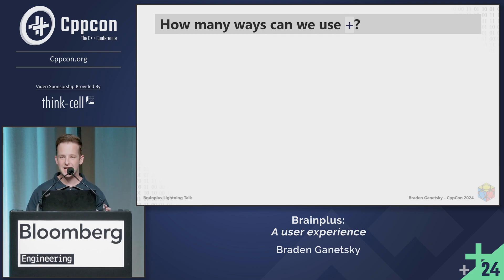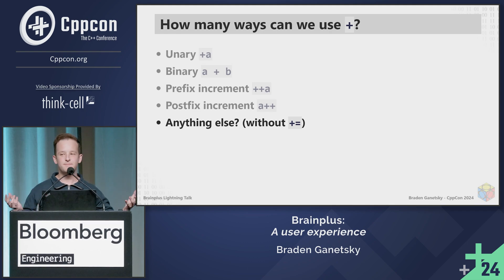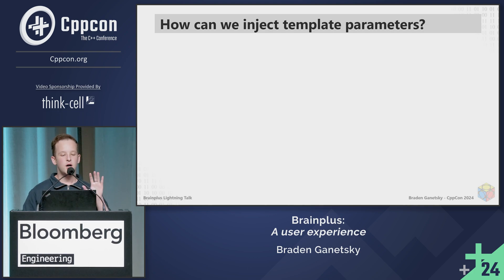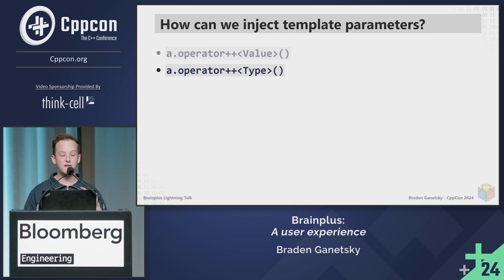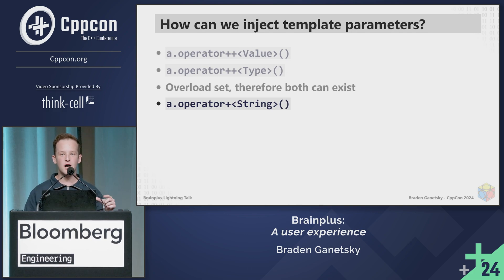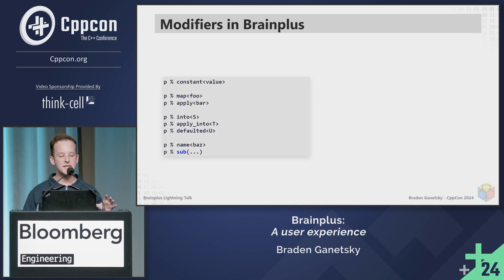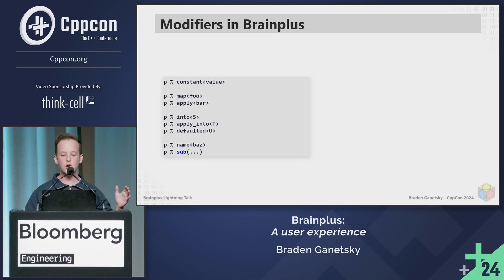How many ways can we use plus? Unary plus, binary plus, prefix, postfix — we can use operator plus and operator plus-plus to inject template parameters. I can call a.operator++() of value, or a.operator++() of type, and since it's an overload set, both can coexist. I can also have a.operator+() of a string for the named modifier — this is necessary because it's expression templates. In BrainPlus, modifiers use operator plus-plus, so I'm just using plus.